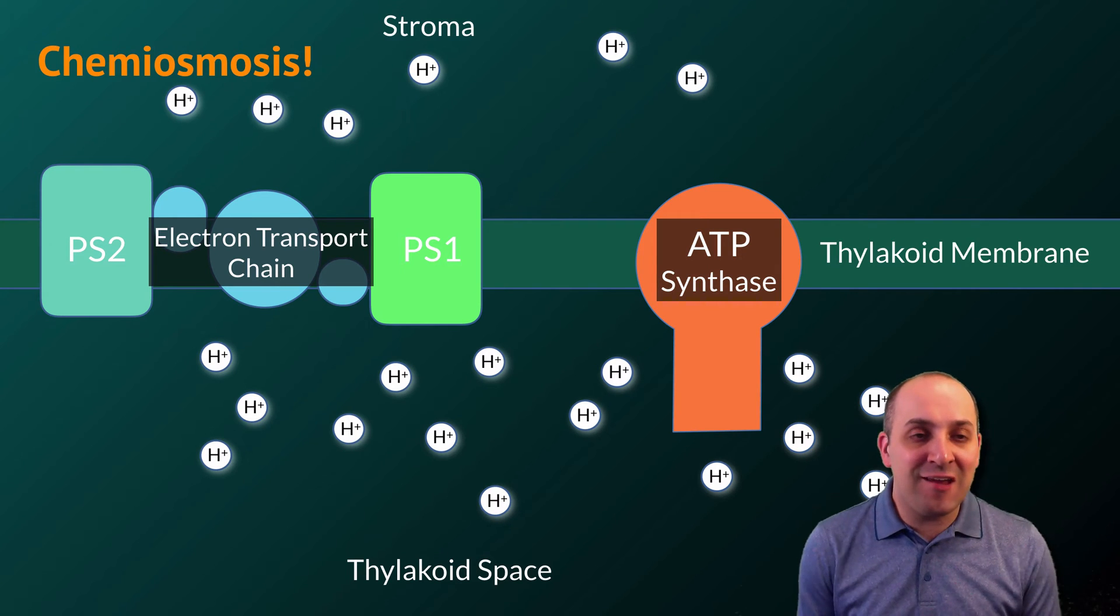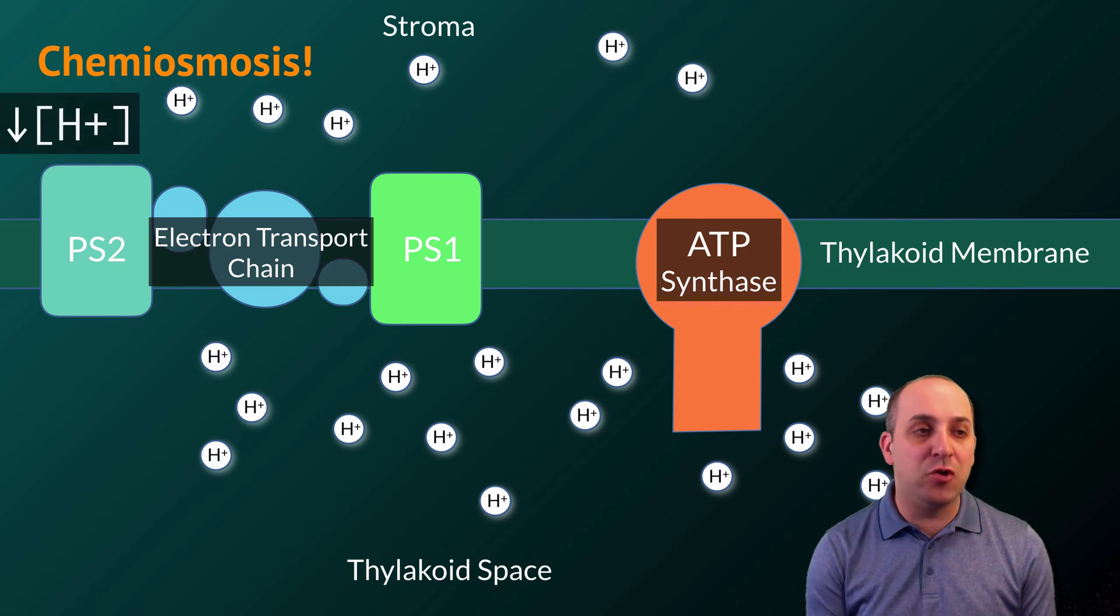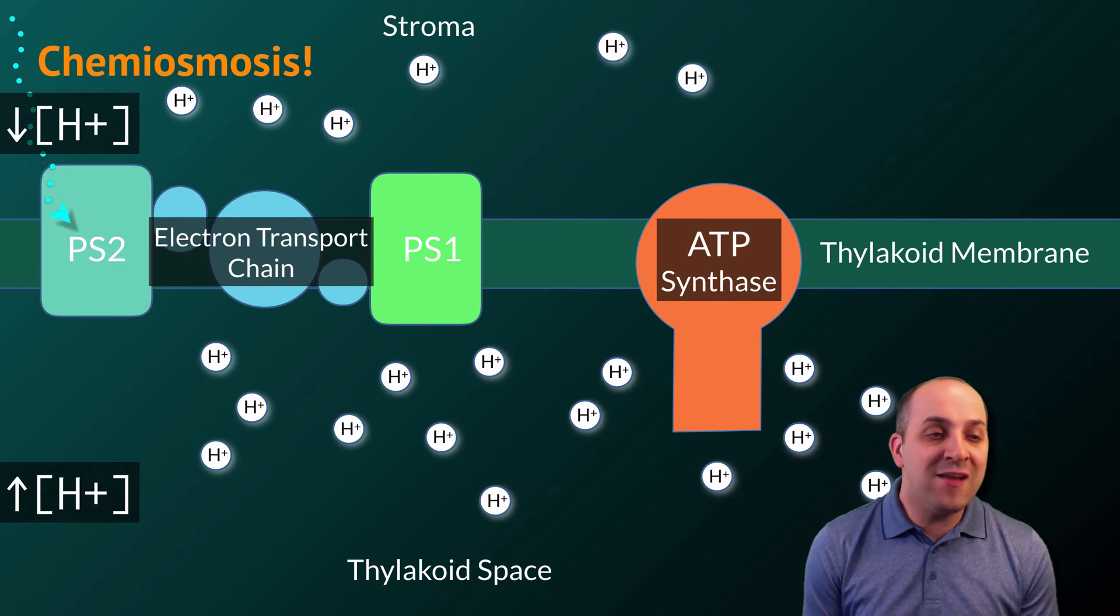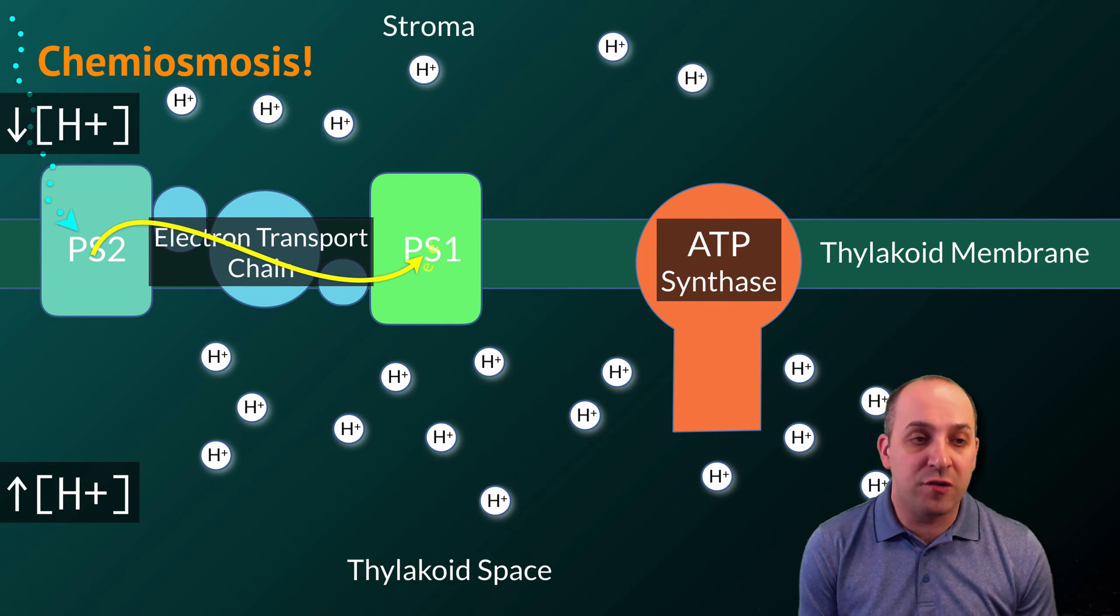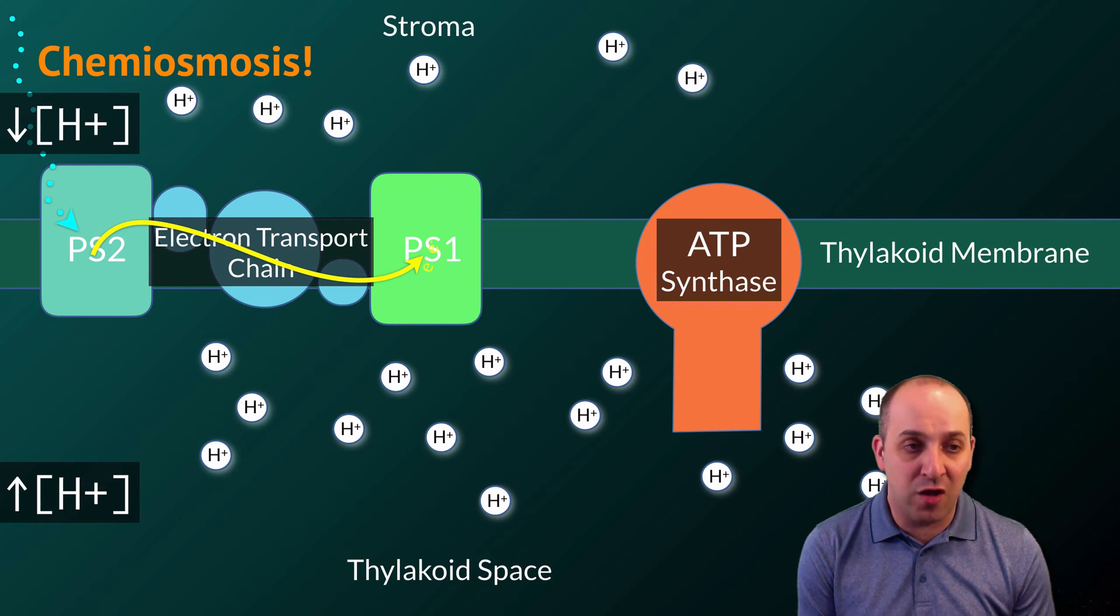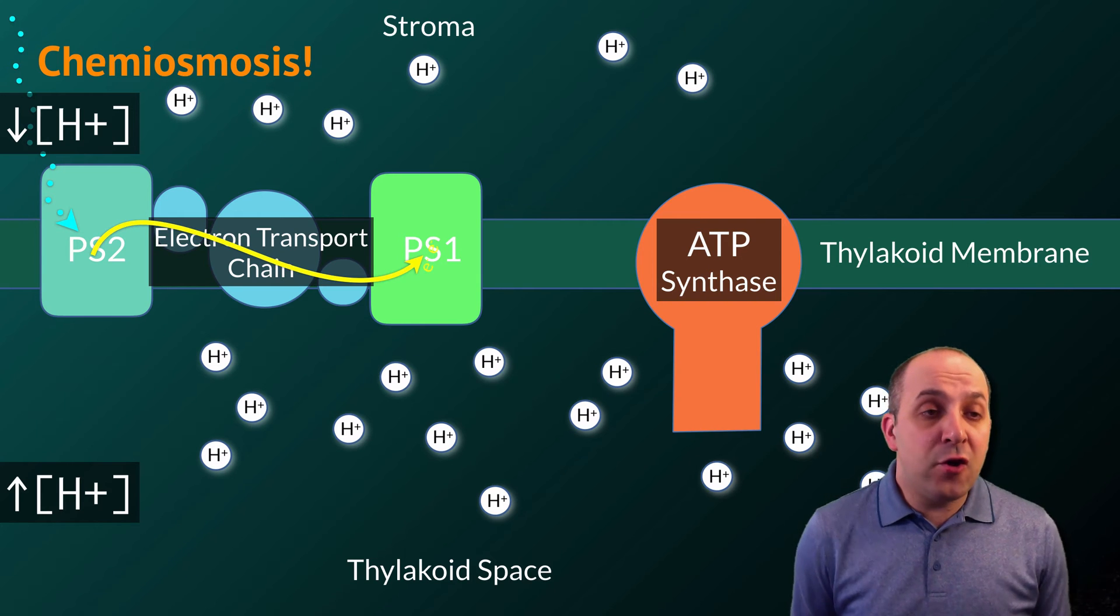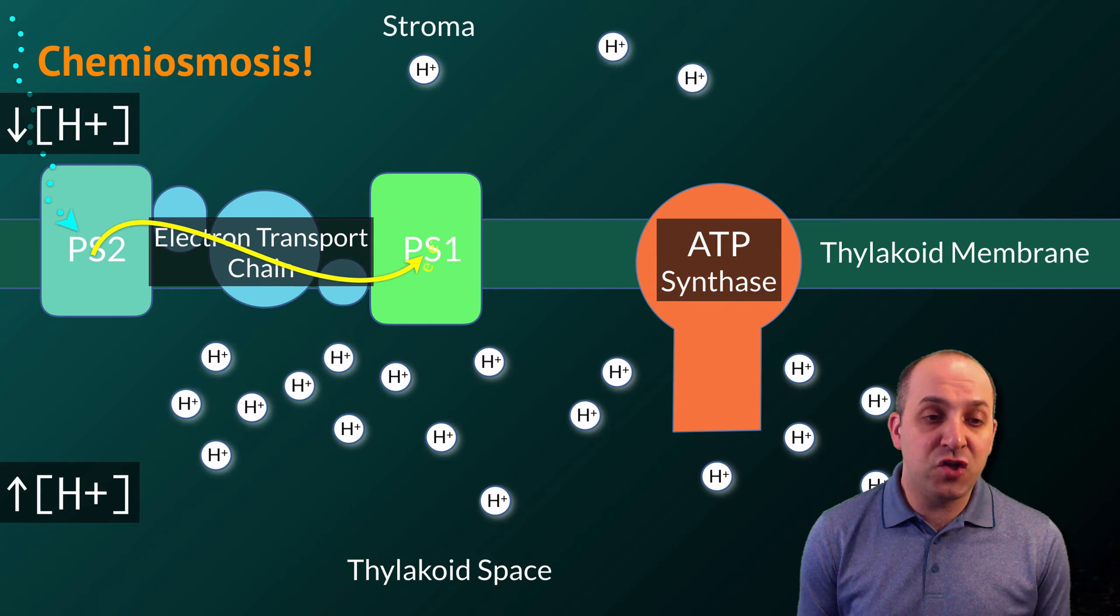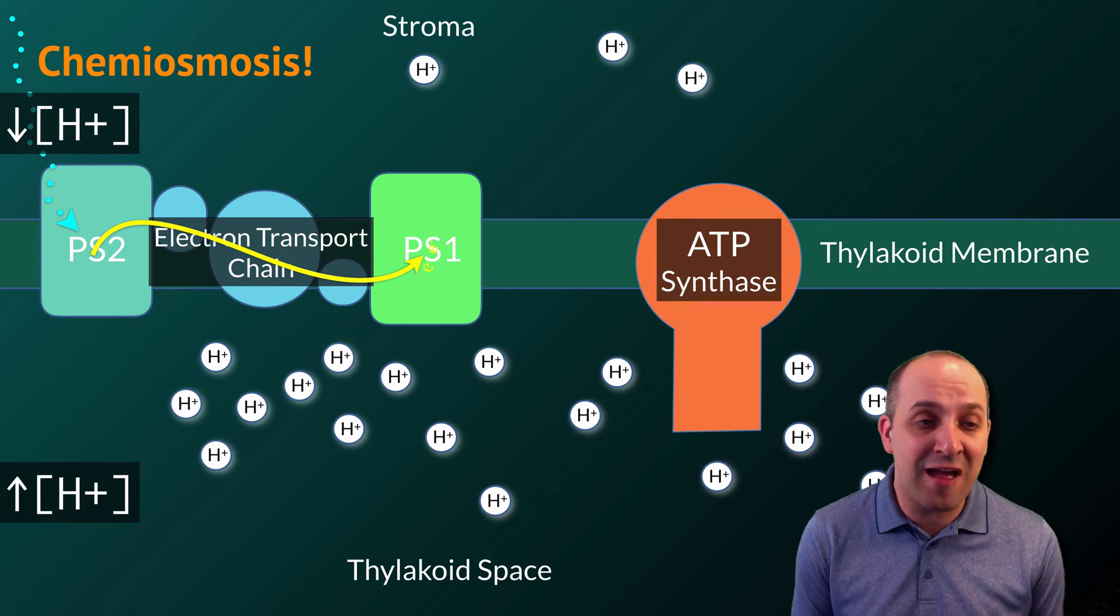The electron transport chain sits in between two different photosystems, which are termed photosystem 2 and photosystem 1. The proton gradient is established so that there is a higher concentration of protons in the thylakoid space than there is in the stroma. When photons interact with photosystem 2, the chlorophyll in photosystem 2 produces high-energy electrons that then move through the electron transport chain to photosystem 1. The free energy that's produced from the movement of these electrons is used by the members of the chain to pump protons from the stroma into the thylakoid space, maintaining the proton gradient.